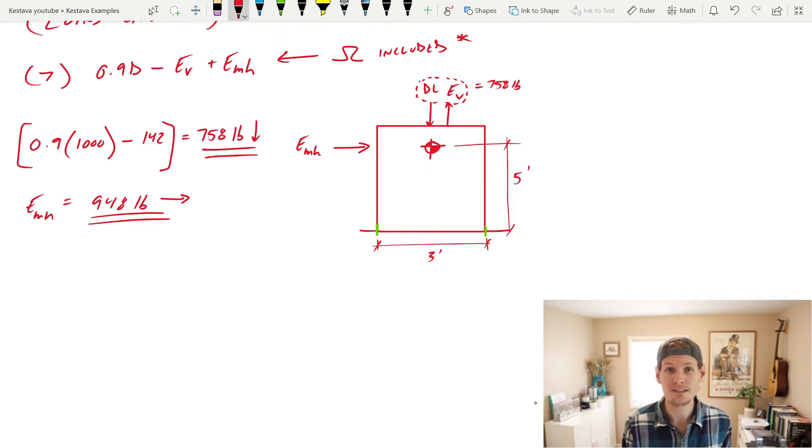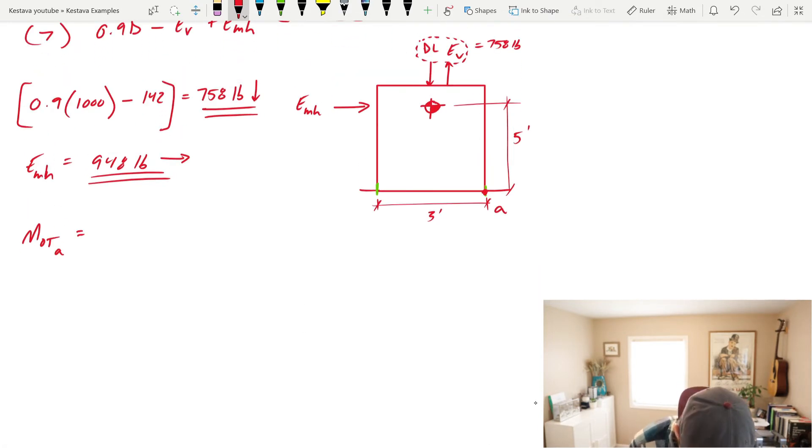Let's now transform these loads into loads that are going to be experienced by each one of the anchor points. For that, we need to first find overturning. And let's take it about point A. I'm going to go right there. Your overturning is just EMH times five feet. And for those not following along, EMH is applied to your center of mass of your unit. And this, that is our datum that we give here. I'm going to say center mass CM. That is almost always given by your unit manufacturer. So you're given a unit and you're given a cut sheet that says all these different components and dimensions and weights and all of that stuff is within that cut sheet by the manufacturer that made that unit. And with that, they also give you a center of mass that you then use for your calculations like we're doing right now.